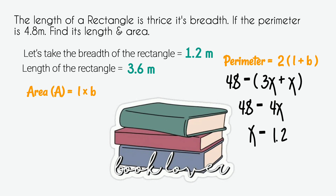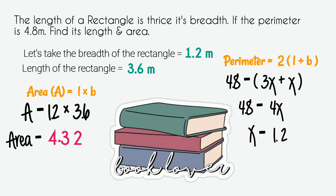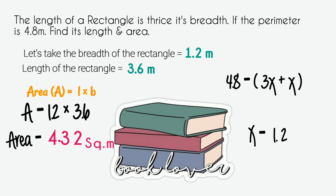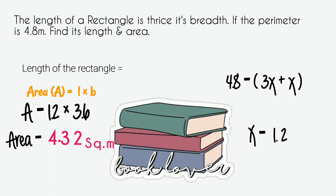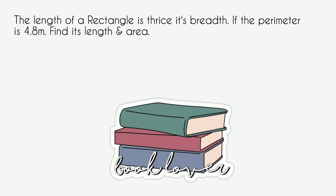Next we find the area of the rectangle. With length and breadth known, the area is 1.2 into 3.6. We multiply the decimals — remove the decimal points, multiply the numbers, then place the decimal point — and get 4.32. So the area of this rectangle is 4.32 square meters.